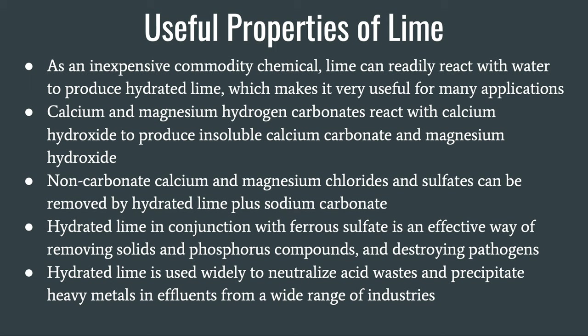What are the useful properties of lime? As an inexpensive commodity chemical, lime can readily react with water to produce hydrated lime, which makes it very useful for many applications. Calcium and magnesium hydrogen carbonates react with calcium hydroxide to produce insoluble calcium carbonate and magnesium hydroxide. Non-carbonate calcium and magnesium chlorides and sulfates can be removed by hydrated lime plus sodium carbonate. Hydrated lime, in conjunction with ferrous sulfate, is an effective way of removing solids and phosphorus compounds and destroying pathogens.